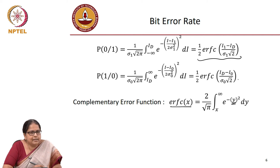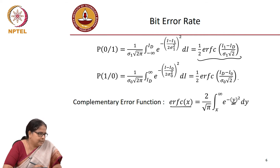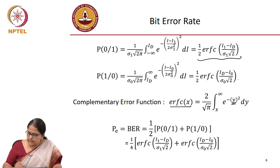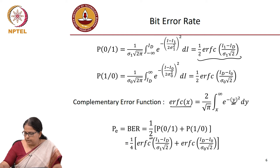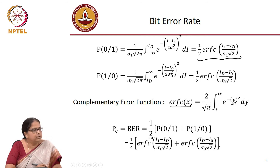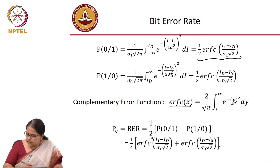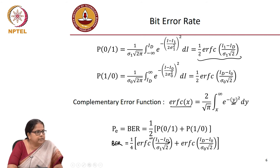The complementary error function plays a very important role in determining the bit error rate. The BER is half the sum of the two erfc terms, resulting in one-fourth times erfc of (i1 − iD)/(sigma1 × root 2) plus erfc of (iD − i0)/(sigma0 × root 2). You can see that the BER is now decided by iD, your decision threshold.